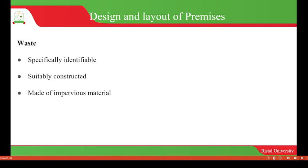Still under the design and layout of the premises, there has to be a way of managing waste released in the process of handling food. Waste will be specifically identifiable so that it will prevent accidental contamination. It has to be suitably constructed to avoid contamination, and the materials used for keeping waste should be made of impervious material. Even channels used should be impervious and should not leak to avoid contamination.